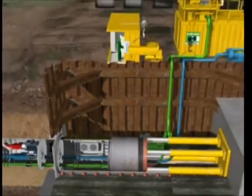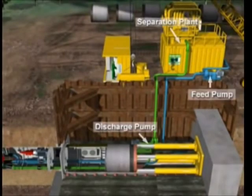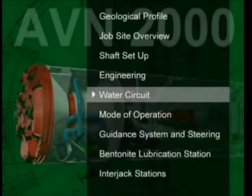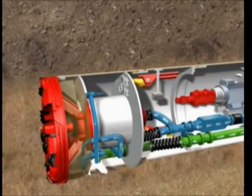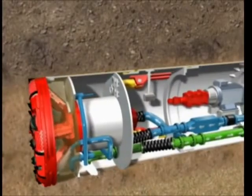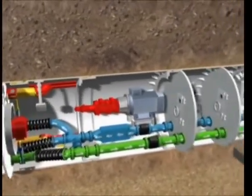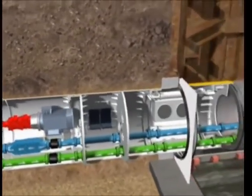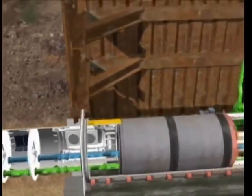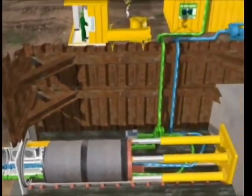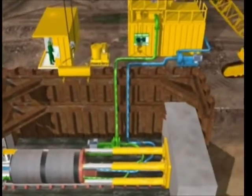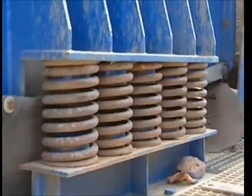The slurry feed and discharge lines pass through the entire machine and along the tunnel to the separation plant. The material transport system is a closed system. The blue lines feed the bentonite suspension to the excavation chamber and the green discharge line transports the bentonite suspension and excavated material to the separation plant where it's separated via vibrating screens and hydrocyclones.